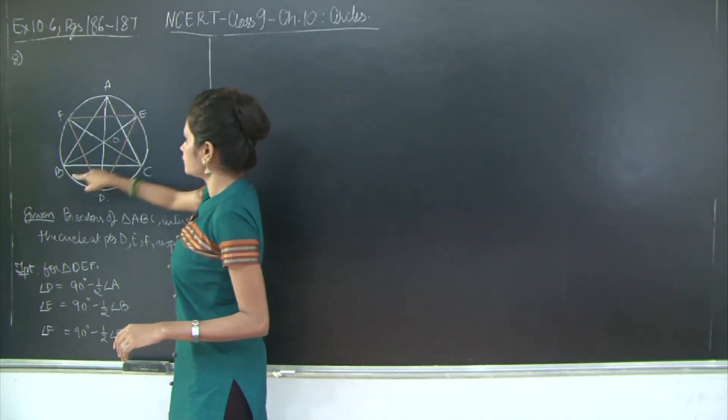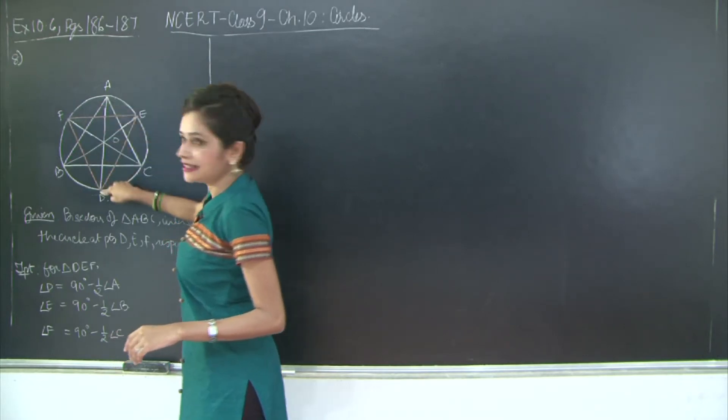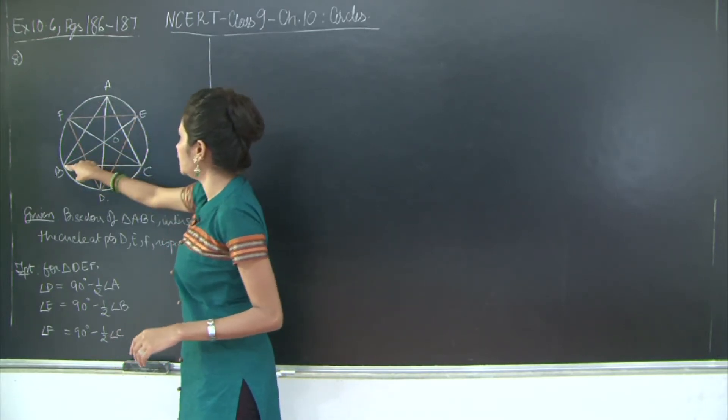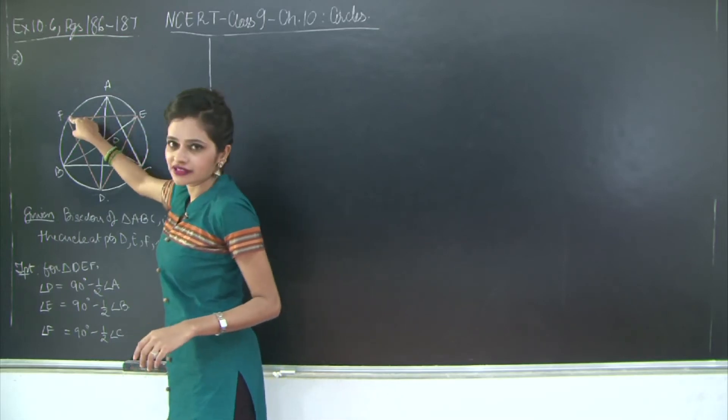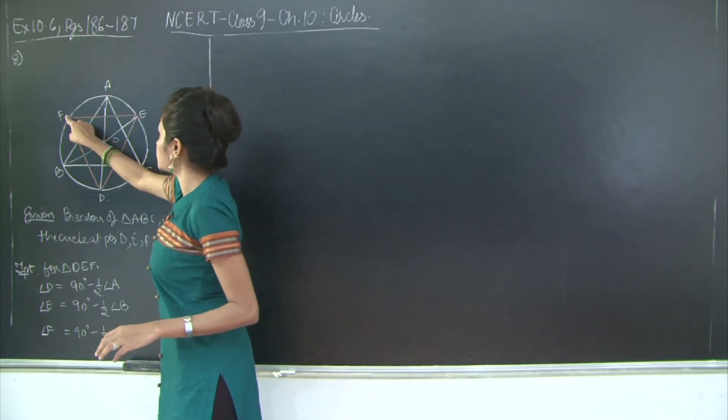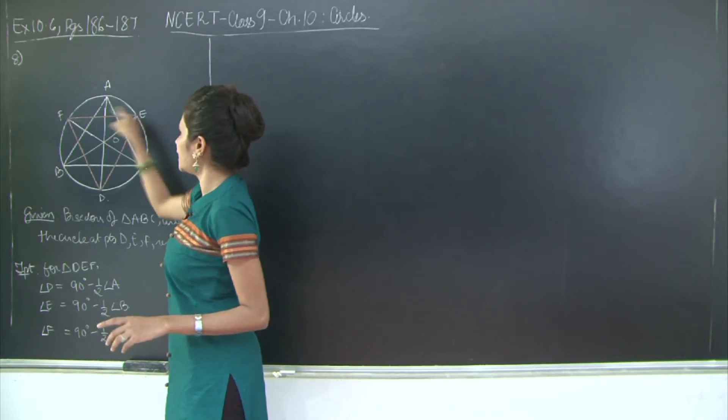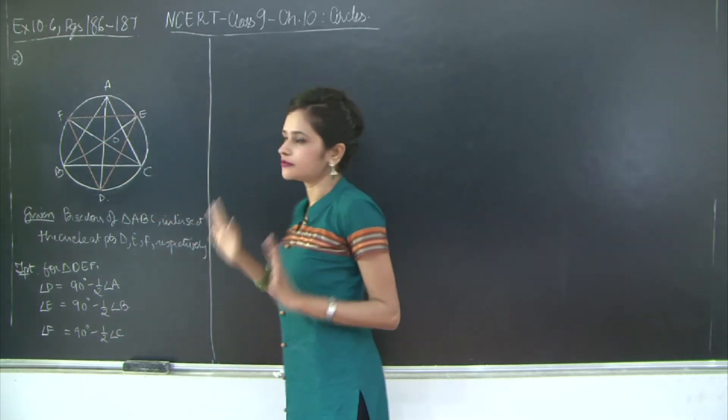So you have angle A here, so AD is the bisector, then you have angle B so BE is the bisector, and angle C out here so CF is the bisector, and all these points ABC and DEF lie on the circumference of the circle.